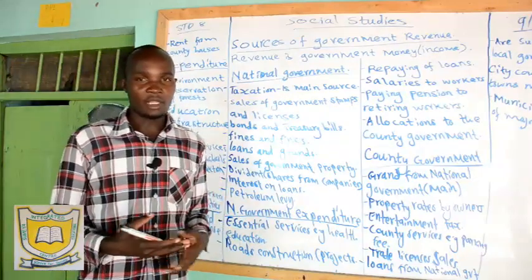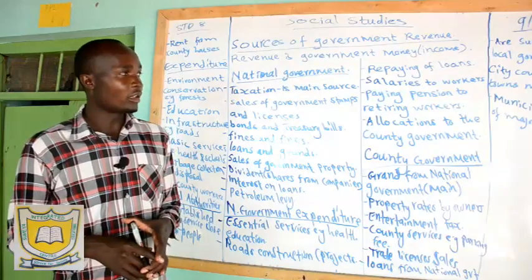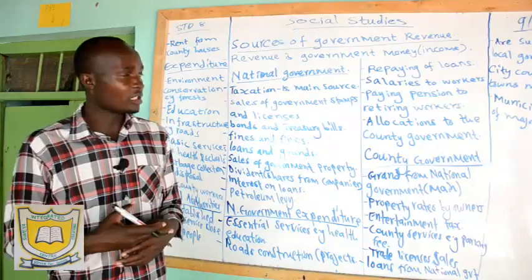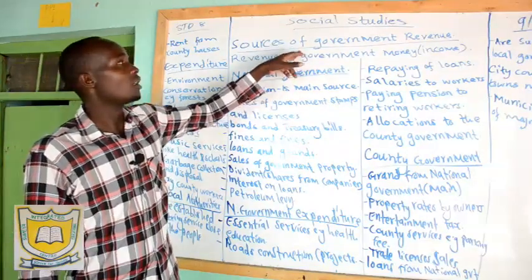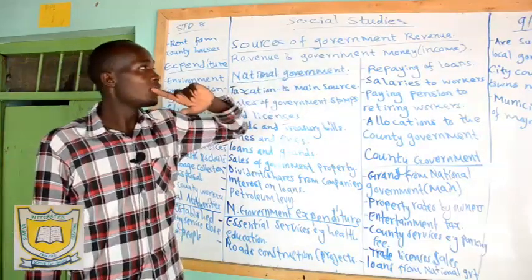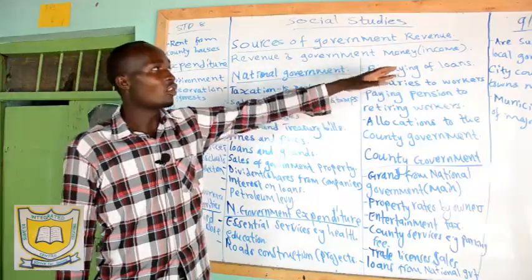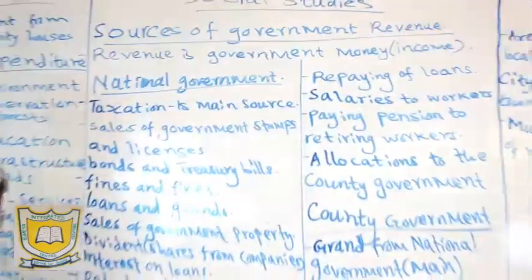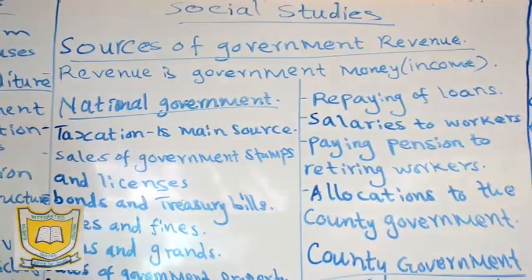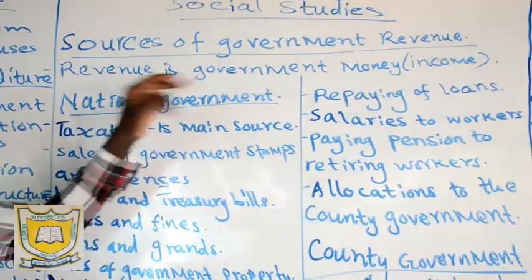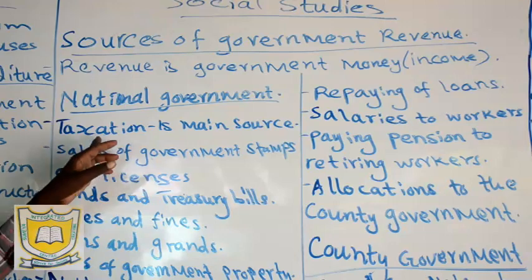We also have corruption courts and tribunals, which may be established by an Act of Parliament. The main role of the judiciary is to interpret government law and administer justice to the people. Now we want to look at the sources of government revenue. Revenue is government money or income — that is what we call revenue.